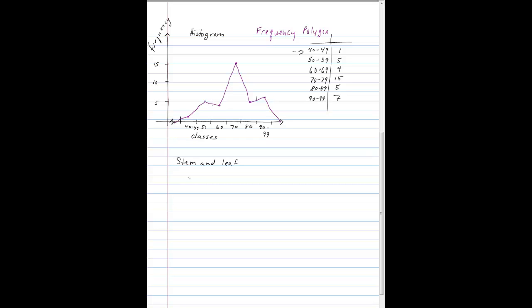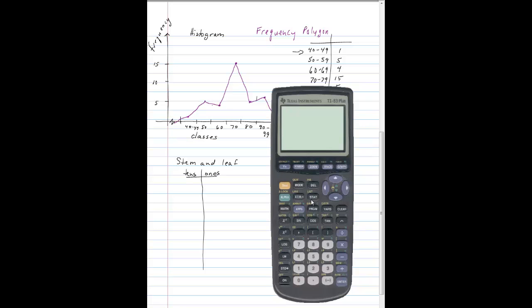Next, we need to do the stem and leaf plot. The stem is going to be our tens place, and our ones place will be our leaf. For instance, our first data point, let's look at our data points again. Let's go to stat and edit again, and then the list.